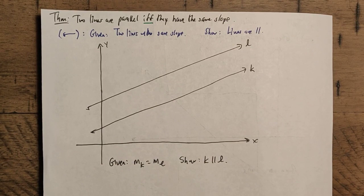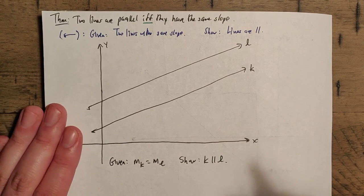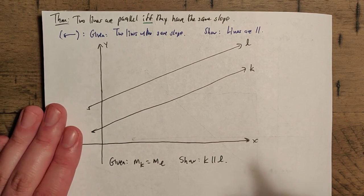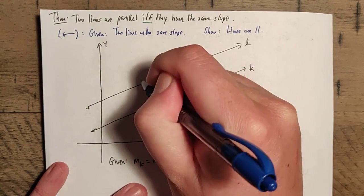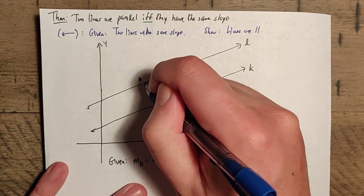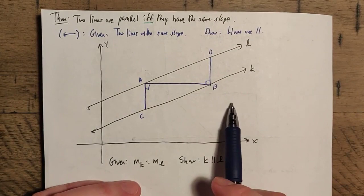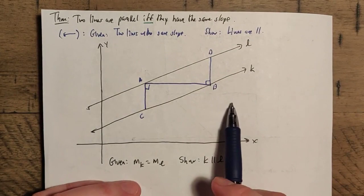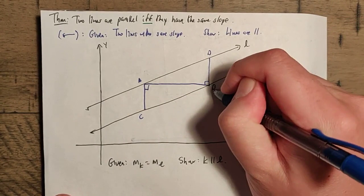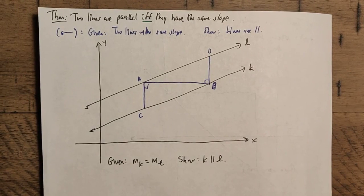Here are our two lines. Let me call them K and L. We're given that the slope of K equals the slope of L, and I want to show that K is parallel to L. Because slope is rise over run, we need to introduce a rise and a run into the picture. So I'm going to draw a horizontal line connecting two points — one on line L and one on line K — call them A and B. Then I'll sketch vertical lines: I pick a point C such that AC is perpendicular to AB, and DB is perpendicular to AB.